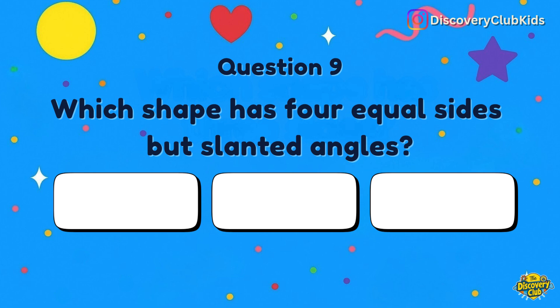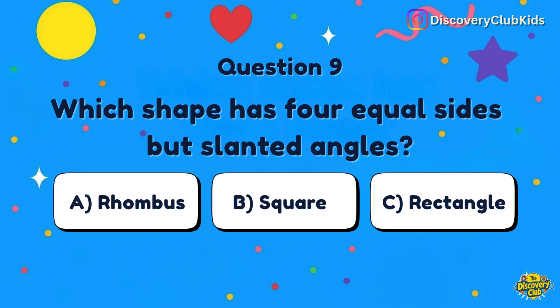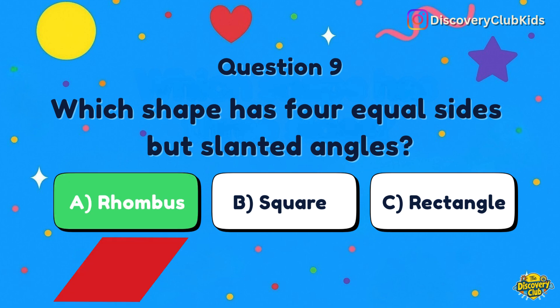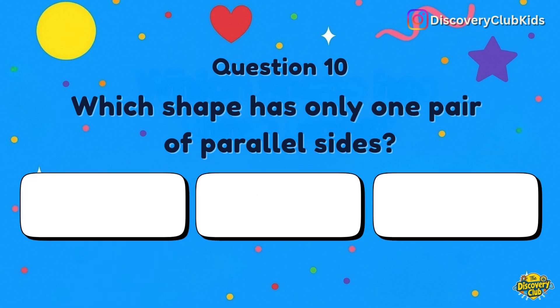Question number 9: Which shape has four equal sides but slanted angles? Your options are rhombus, square, or rectangle. The answer is rhombus.